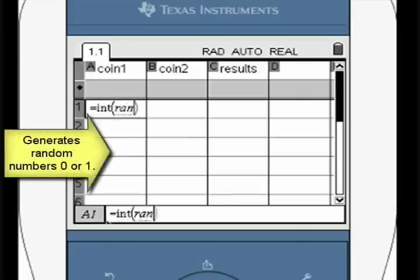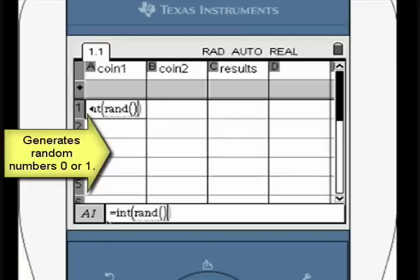Create a random number formula. Press the library key to find the int and rand functions as shown.